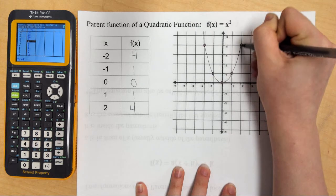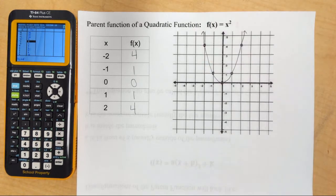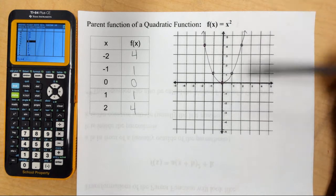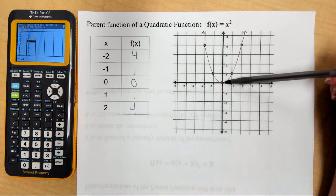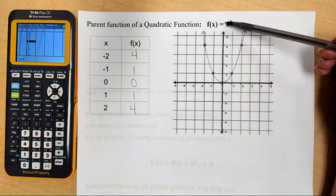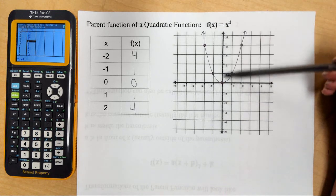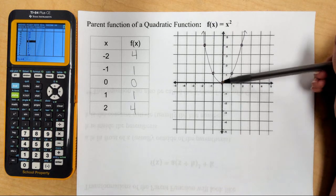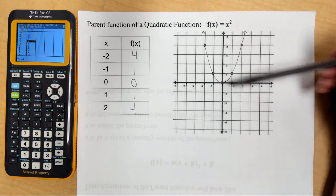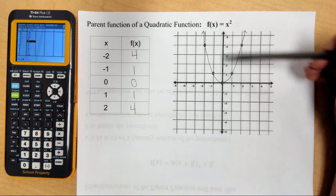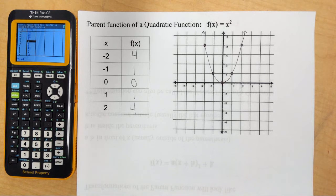This is my parabola — this is my parent function, the most boring quadratic we could possibly think of. The vertex is at (0, 0). The axis of symmetry is at x equals 0. My y-intercept is 0. My x-intercept is 0. My range is y is greater than or equal to 0. Everything is 0, which means it's just pretty boring.